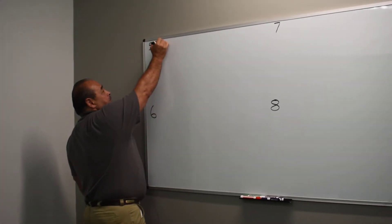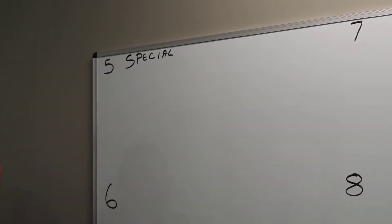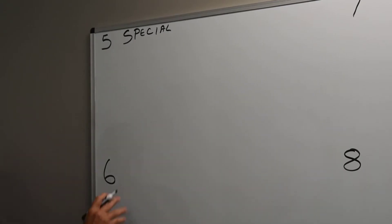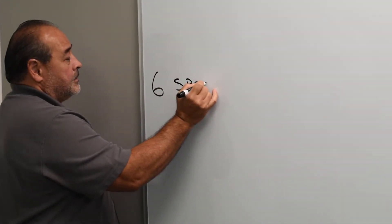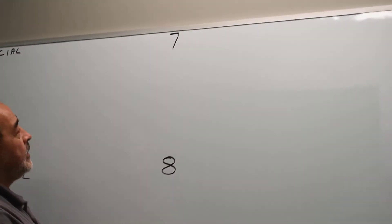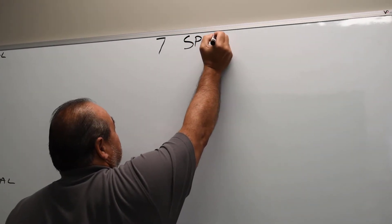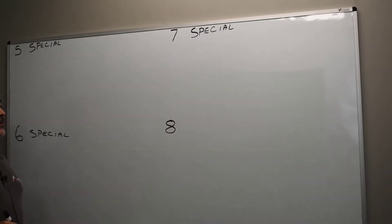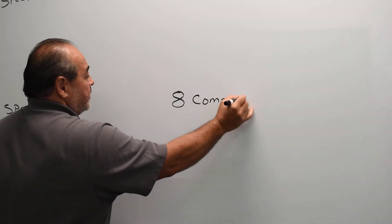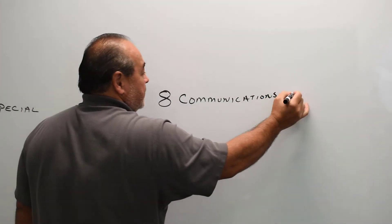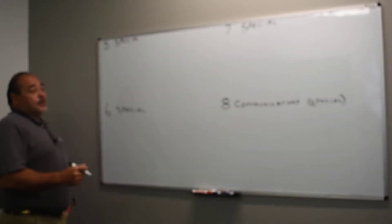The first thing we want to do is write this word, special, referring to chapter five, and then go down to chapter six and write this word, special. Over here to seven, write this word special. And then chapter eight, we're going to write communications, which is special. Let's talk about chapter five.